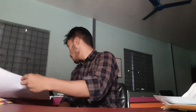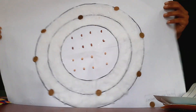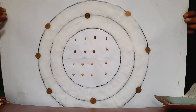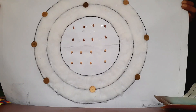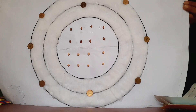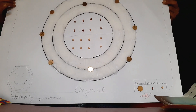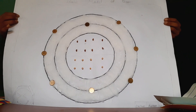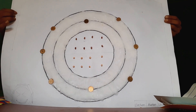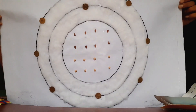The next one is made by Irish Neopane. He has shown creativity by using different types of grains, coins, and cotton to make his project work beautiful. He has made the atomic model of oxygen — isn't it fascinating?